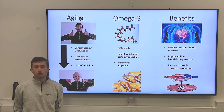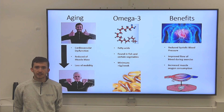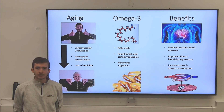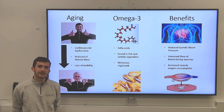We also tend to experience a process called sarcopenia, and this is where our skeletal muscle begins to break down and waste away over time. As a result, we lose our physical strength, we tend to lose our mobility, and we become more reliant on other individuals and on society in general to live our day-to-day lives.